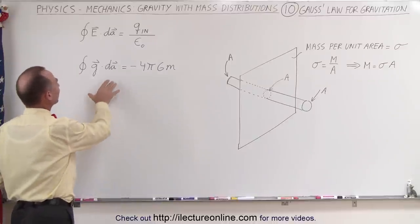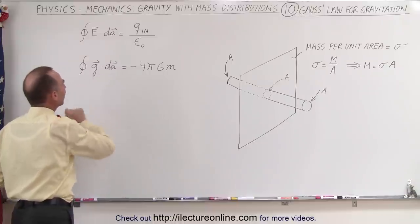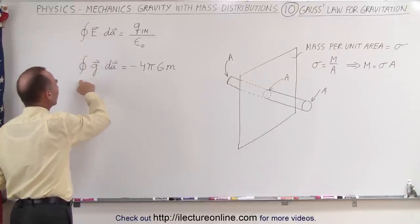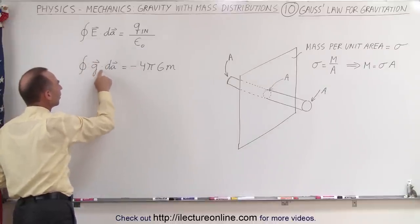And here what we have is a similar equation. This is Gauss's law for gravitation. So we have the surface integral of the gravitational field. Instead of the electric field, we have the gravitational field dotted.